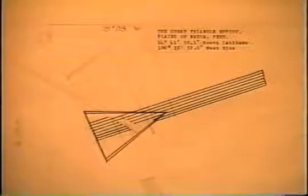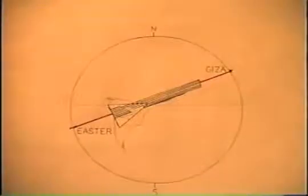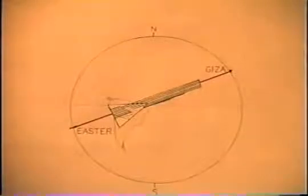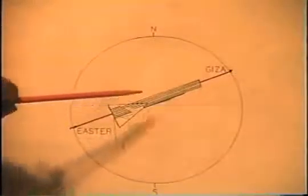One of the more interesting displays at Nazca is this one, the so-called Great Triangle. Now notice those several parallel lines that flow eastward from its west side. Why do they all point over toward Giza and Egypt?